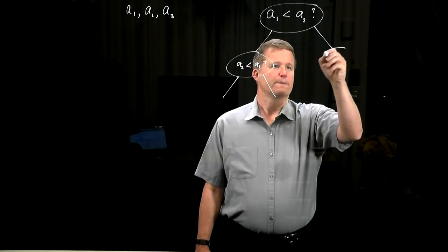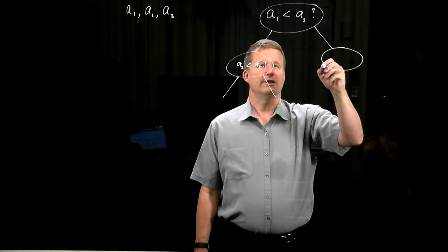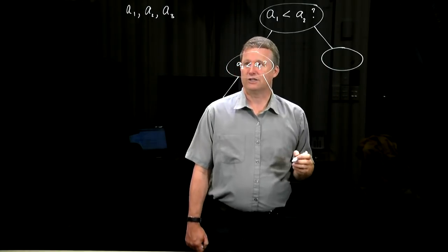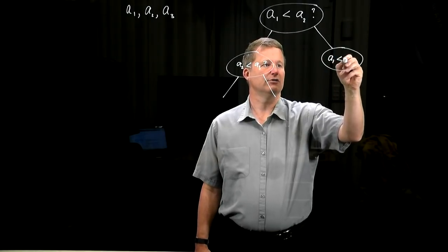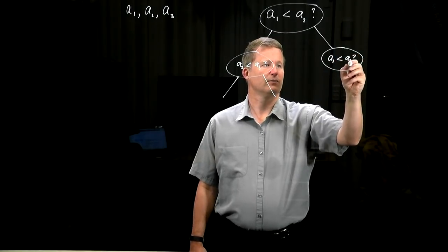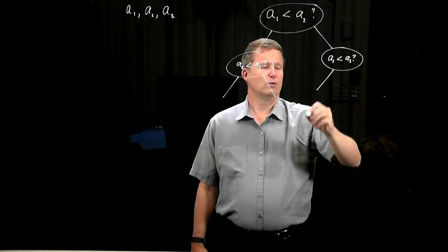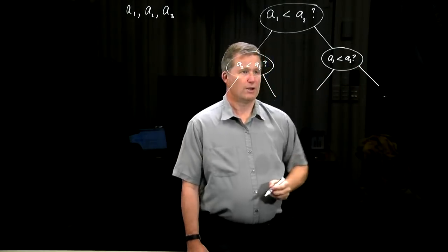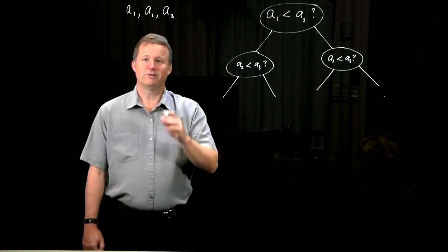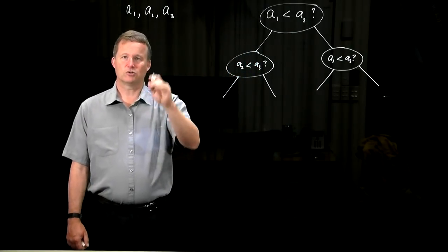On the other hand, if it turned out that a1 was not less than a2, so a1 was the current maximum, then I would have to compare a1 with a3. If a1 was less than a3, then a3 would be the maximum, otherwise a1 would be the maximum. That would be the first pass through of selection sort.